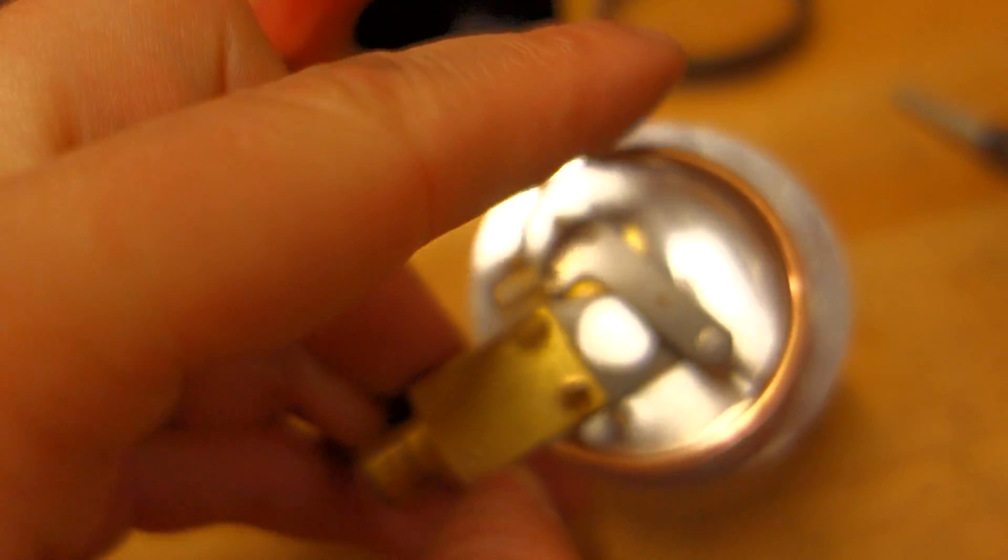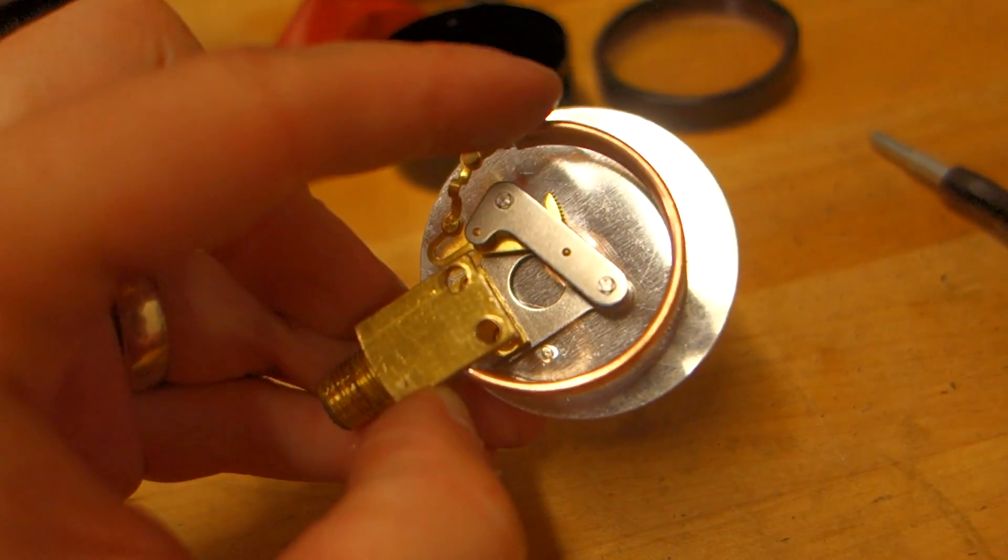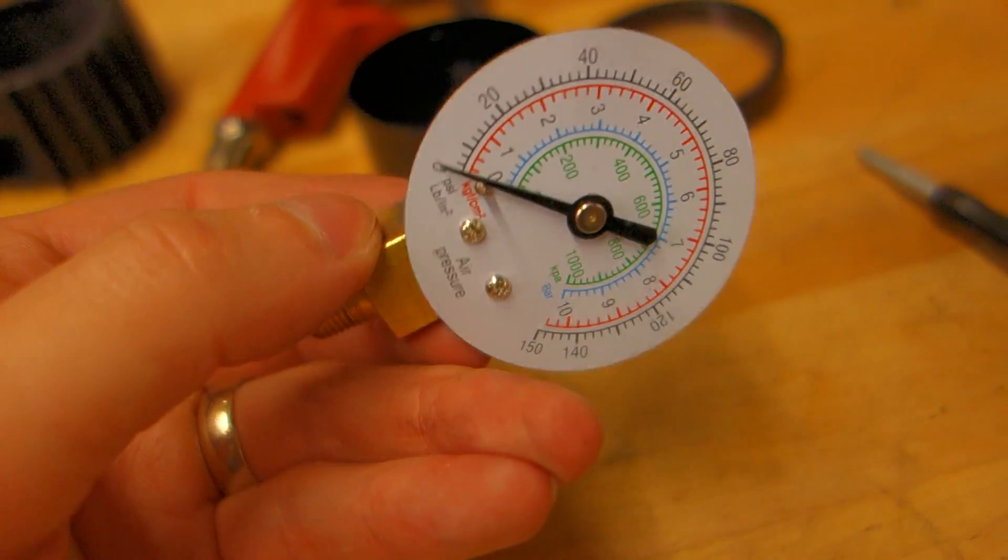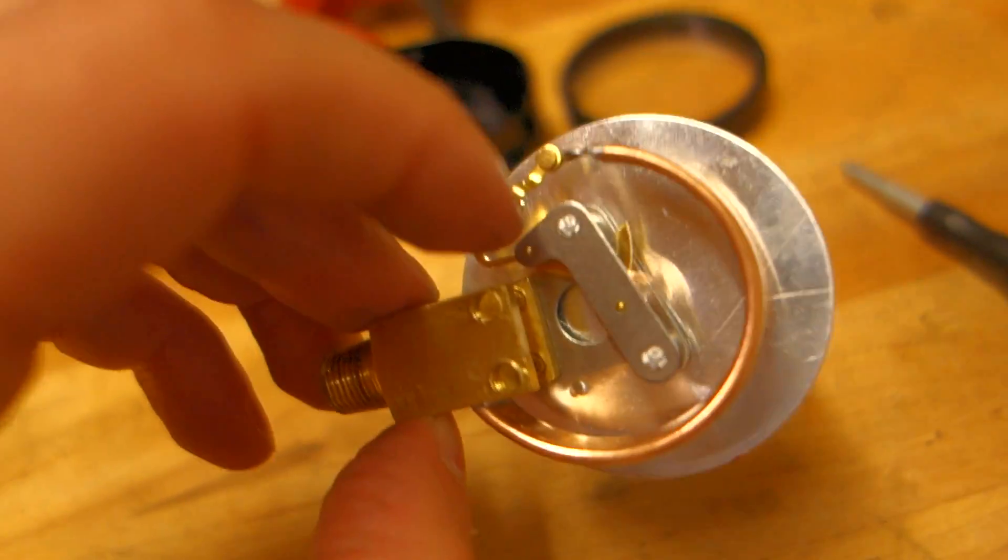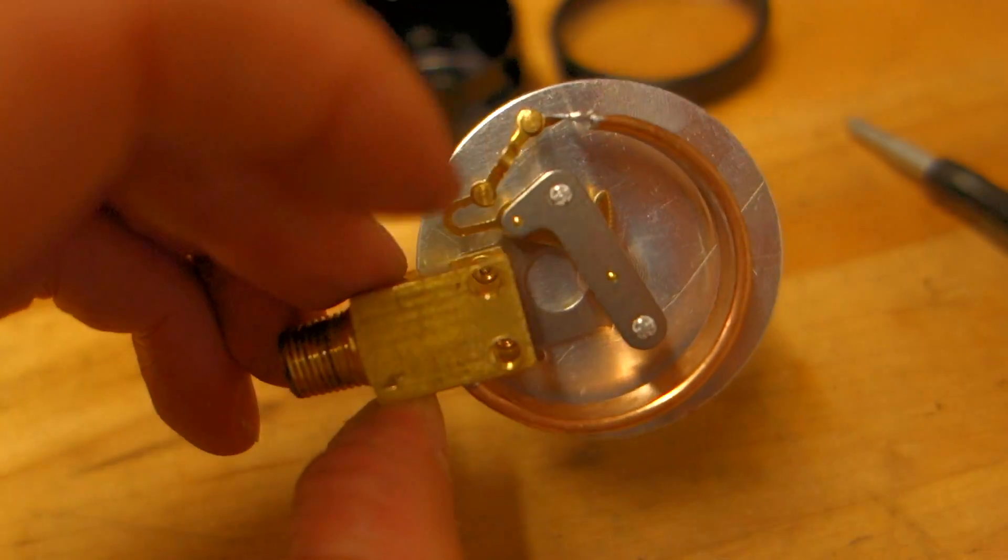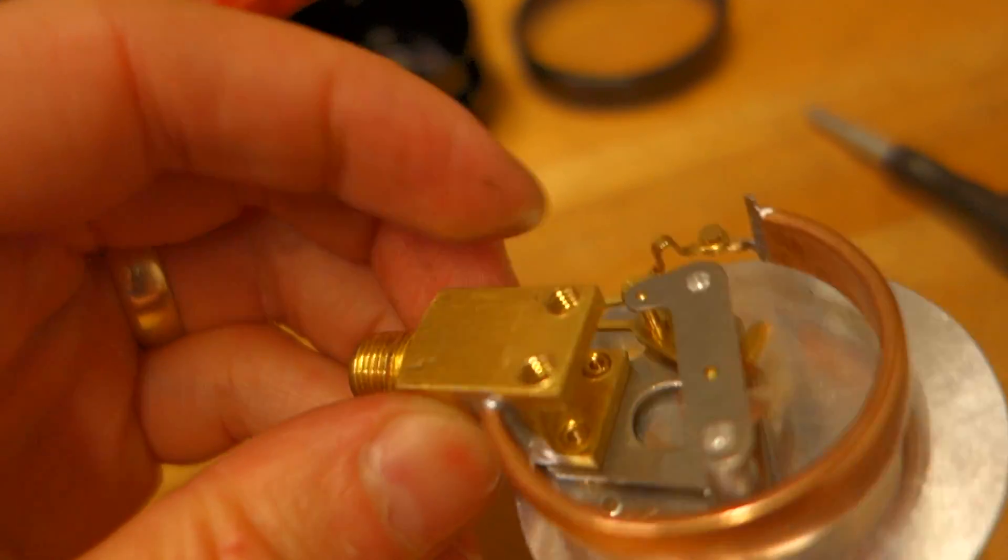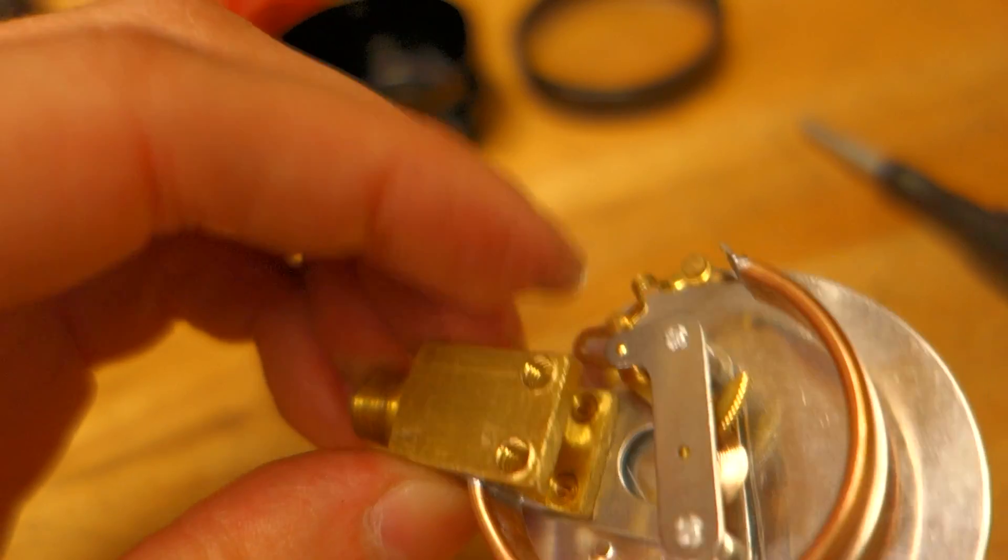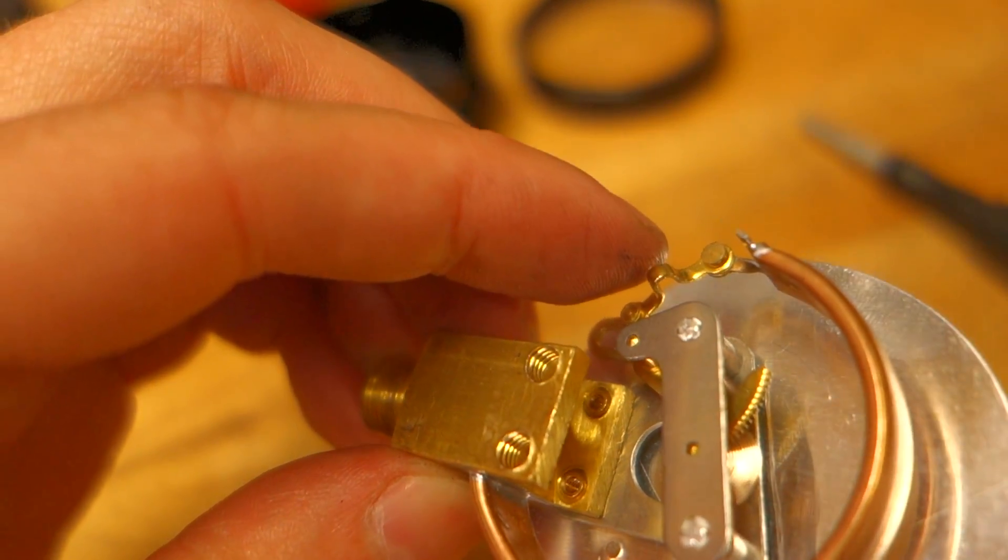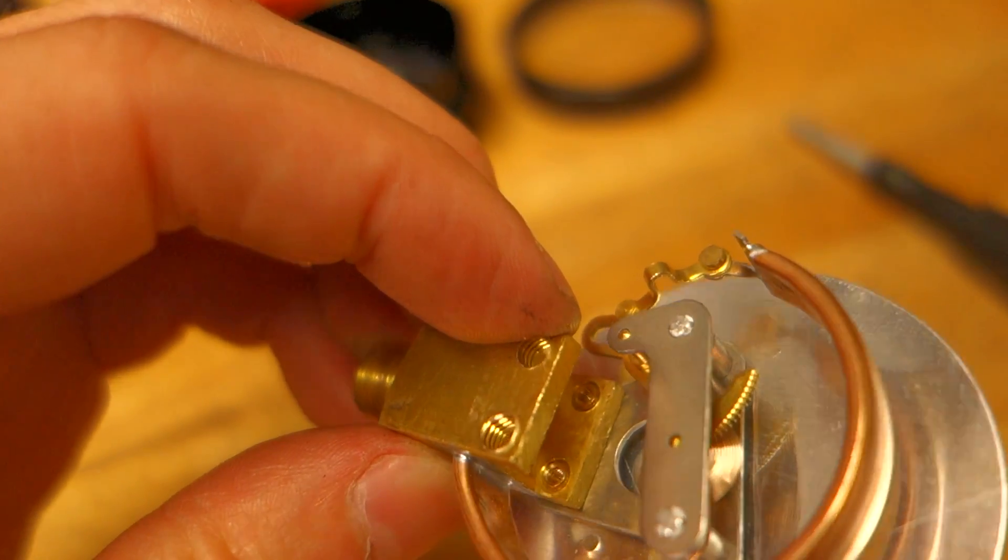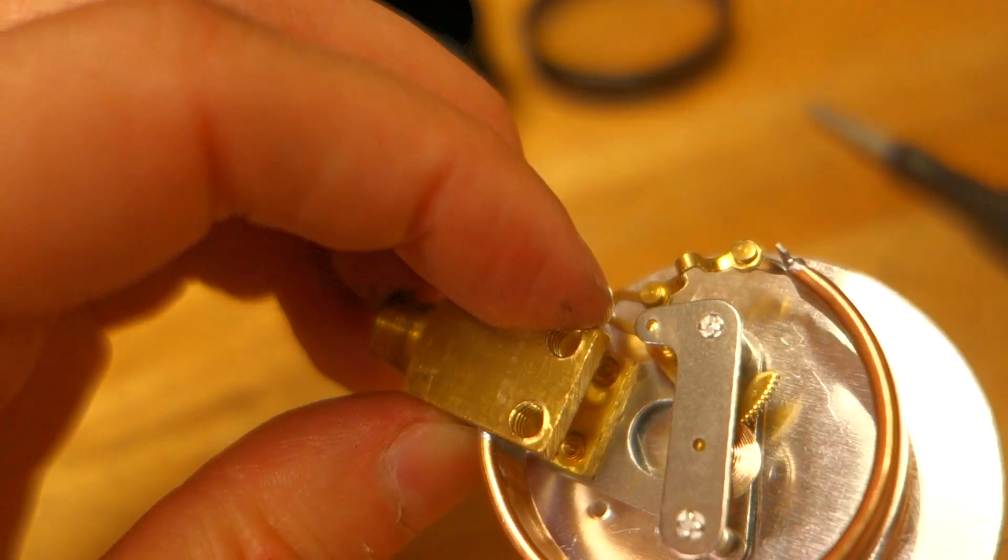So I was starting to bend this hollow pipe, and that just made the gauge get even further out of whack. And looking at the mechanism, I realized that there's this little U shaped piece of copper here. And the purpose of that is actually for calibration.